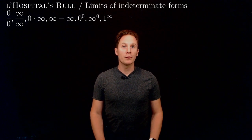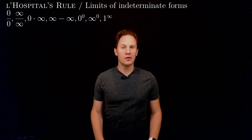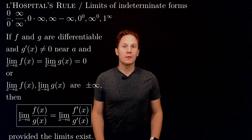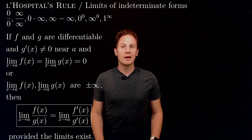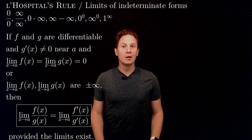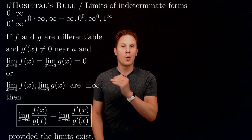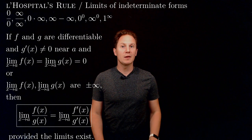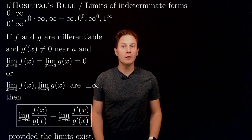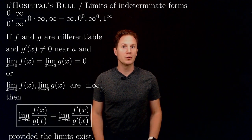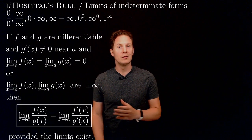L'Hôpital's rule tells us that derivatives may be useful in finding limits of indeterminate forms — one of the seven forms you see here. The statement is that if we have two functions f and g that are differentiable, the derivative of g is not zero around the point a, and the limit as x approaches a of f and g are both zero or both infinite, then the limit as x approaches a of f(x) over g(x) equals the limit as x approaches a of f′(x) over g′(x), provided that the limits exist.